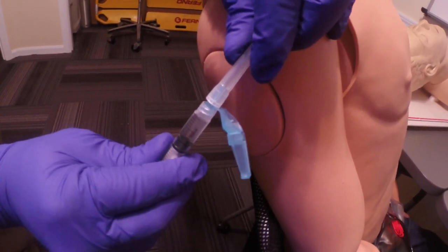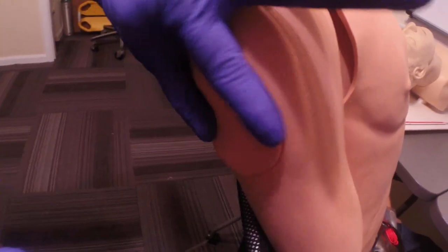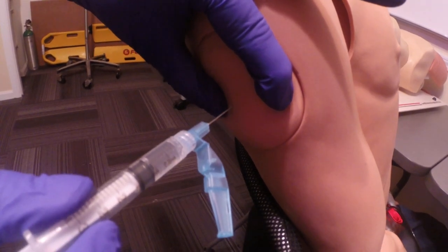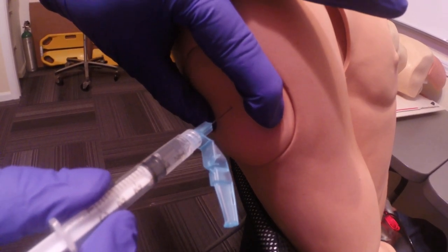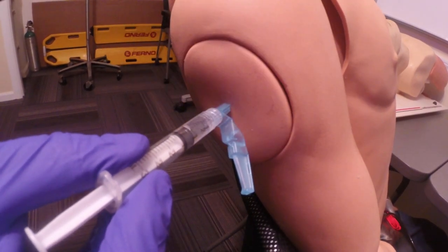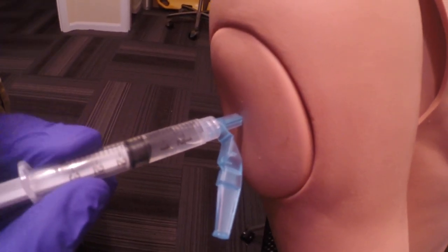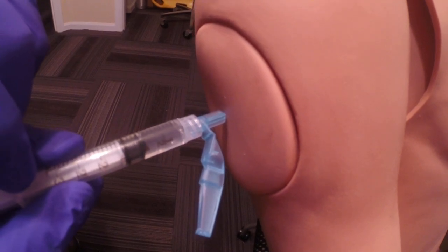We're going to remove our needle cap. Spread the skin, make it nice and taut. We're going to push the needle through into the muscle till the hub is touching the skin. Stabilize the needle, aspirate to make sure you have no blood. Inject at a moderate rate.